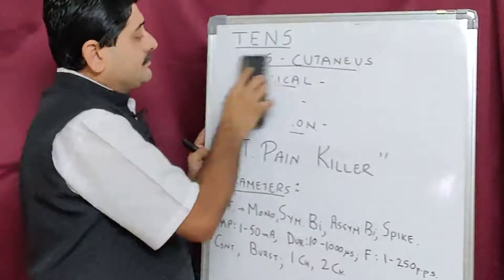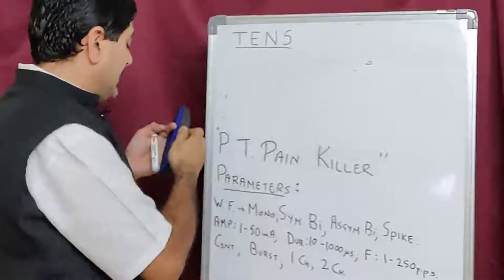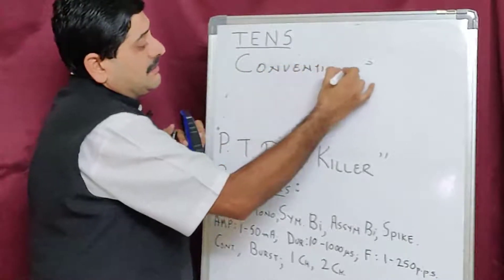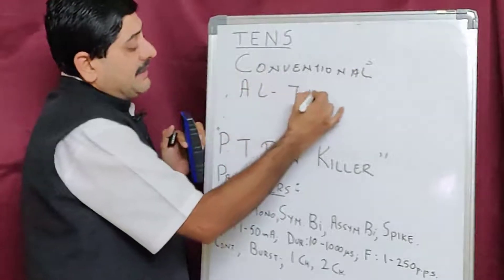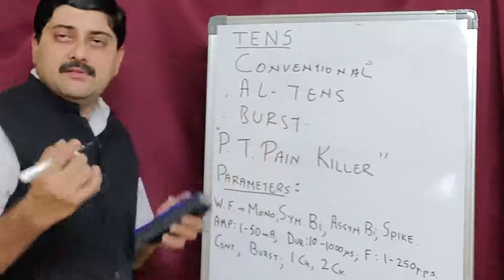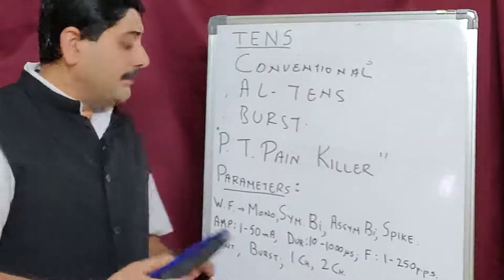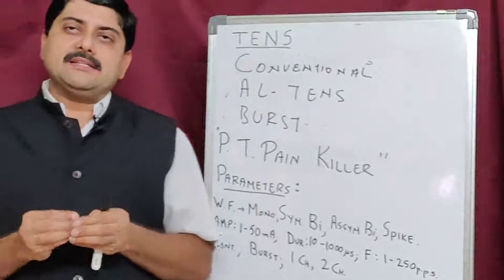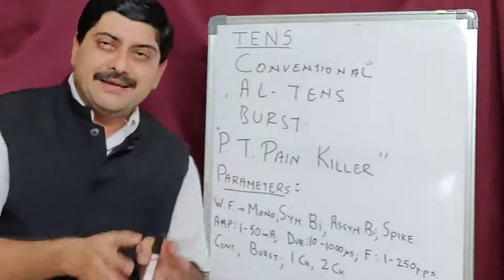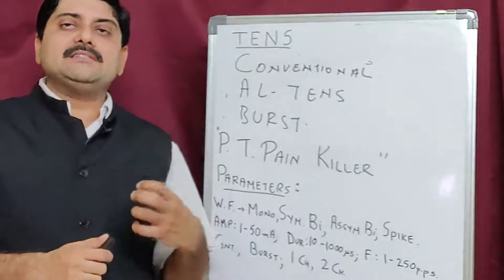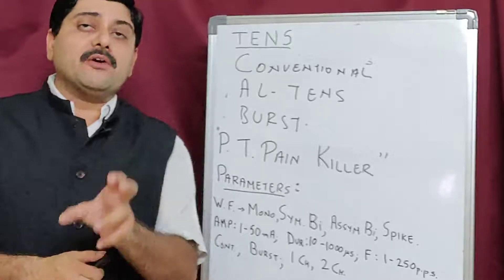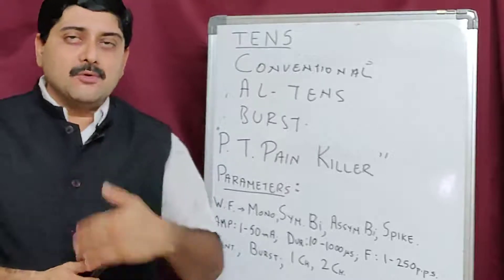The three types commonly used for clinical purposes are: conventional TENS, acupuncture-like TENS (AL-TENS), and burst TENS. In physiotherapy we have anti-inflammatory agents, muscle relaxants, and analgesics. In electrotherapy, TENS is the painkiller we use for many types of pain, with contraindications and precautions to be discussed later.